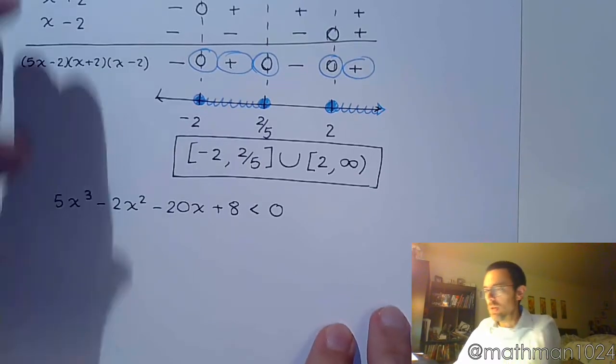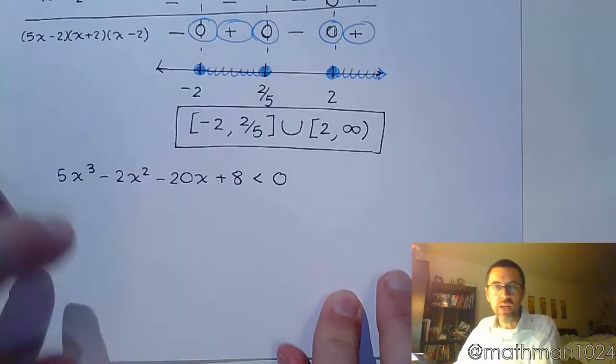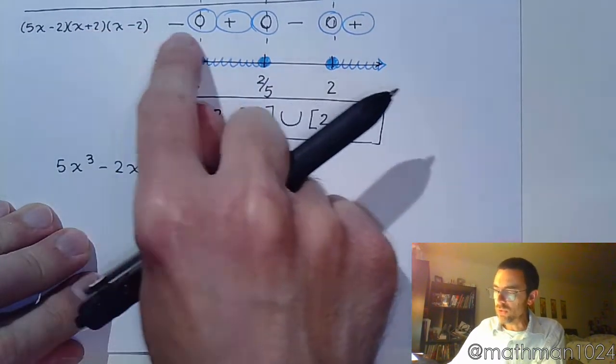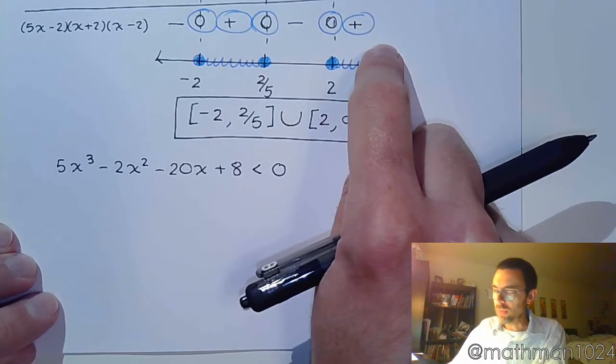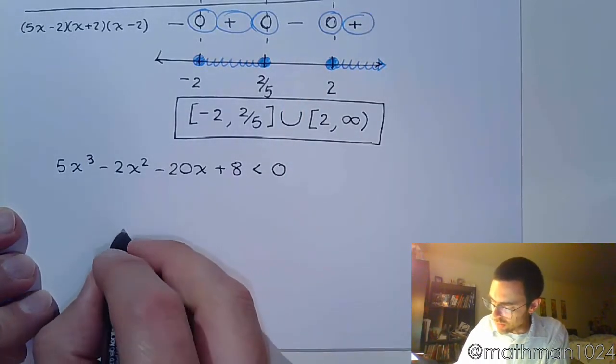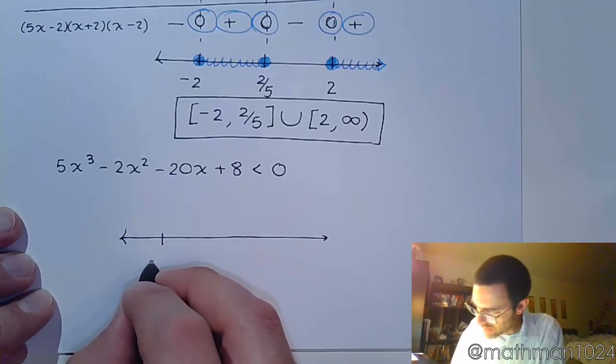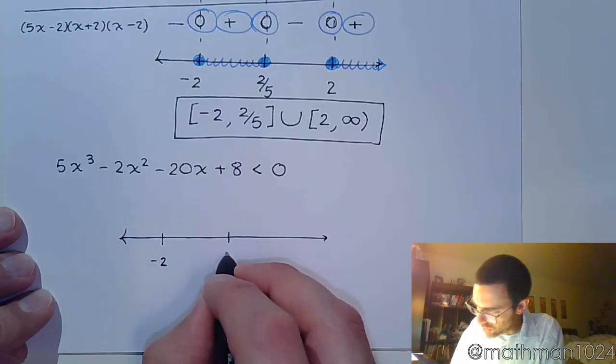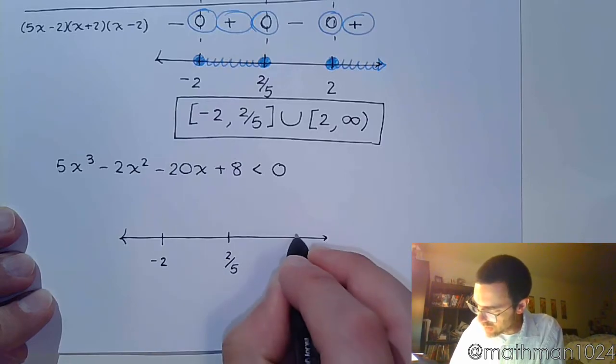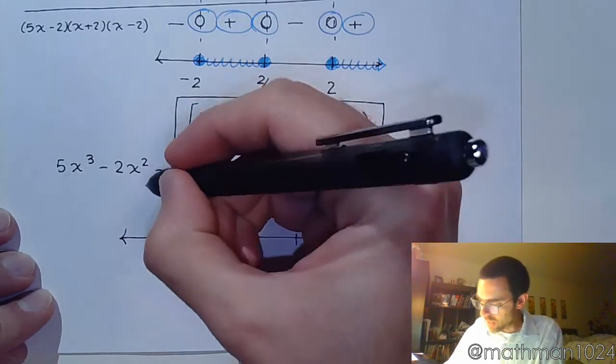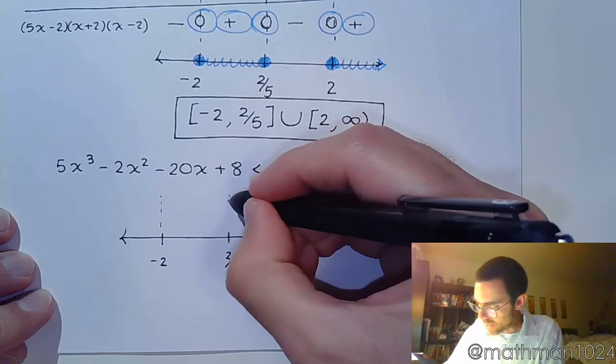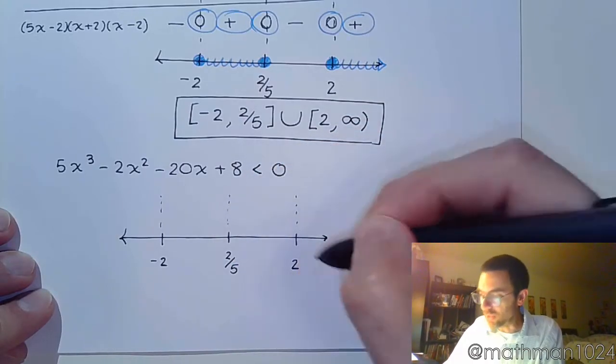if it said 5x³ - 2x² - 20x + 8 and then it said less than 0. Well being less than 0 does not change the end result of your sign chart. So at the end, for your sign chart, we've got the negative 2, the 2/5, and the 2.